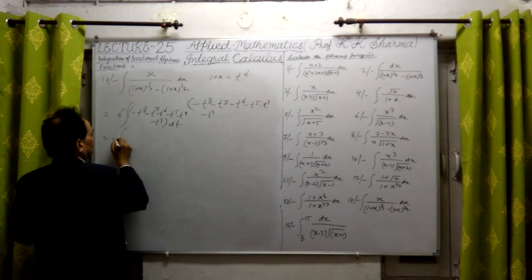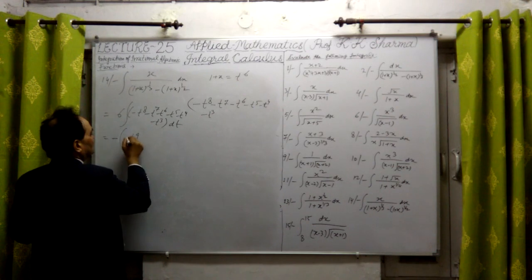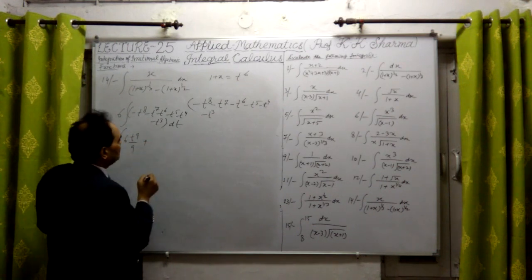It will be minus 3, 6. Okay, I mean this is minus 3, 9, 3, 9 upon 9. Okay, minus plus 3, now all pluses will be there.